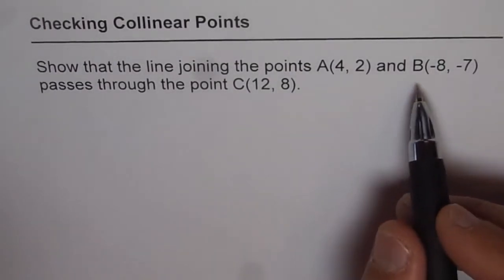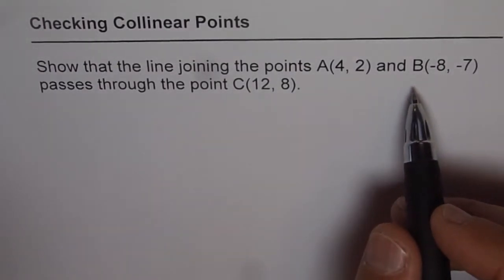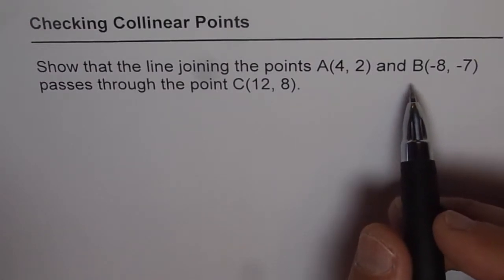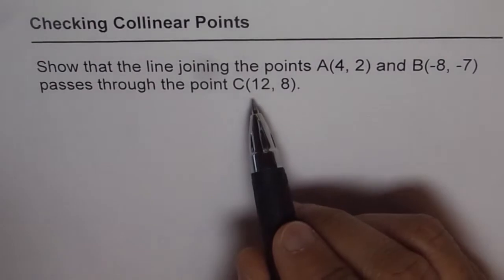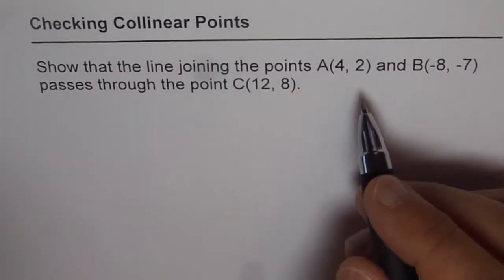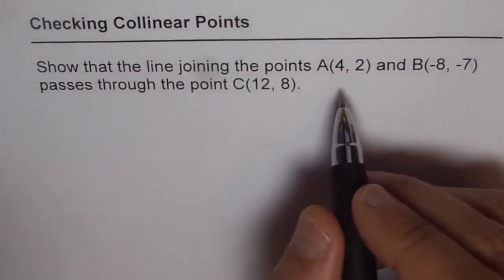Now, to show that these points are on the same line, what we should do is find the equation of line passing through point A and B, and then show that this point C is on that line. So let's find the equation of the line through A and B.